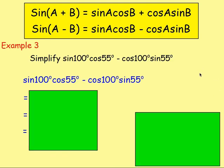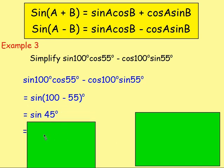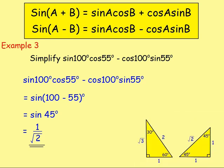Example 3: simplify sine 100 cos 55 minus cos 100 sine 55. For this one, we have the expanded form and we want to put it back into brackets. Because we've got sine cos cos sine with a minus in the middle, we know it's going to be in the form of sine A minus B. So A and B are replaced with 100 and 55, giving sine of 100 minus 55. That's 45, and sine 45 gives us 1 over root 2, using the exact value triangles.